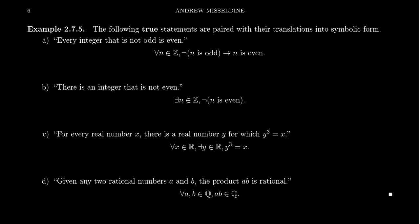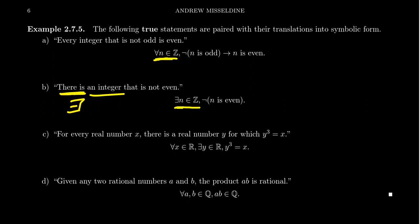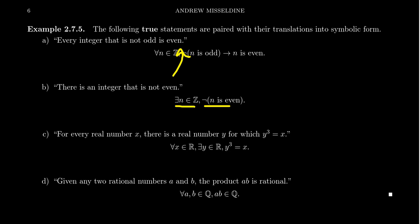Next: there is an integer that is not even — also a true statement, but the quantifier is different. 'There exists' is the existential quantifier, written as ∃n ∈ ℤ, and then the statement that n is not even. By a similar proof, if you're not even, you're odd, but that's not what this statement says even if we could infer it. In symbolic form: there exists an integer that is not even.